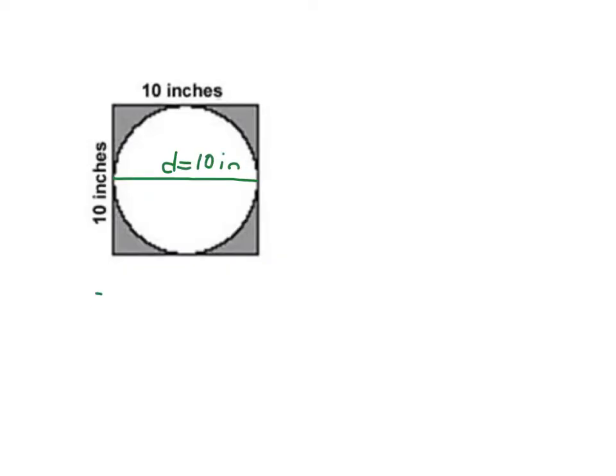So if my diameter is 10, then my radius is going to be half my diameter. So 10 divided by 2 would be 5 inches. And for pi, in all of these problems, I'm going to use 3.14 as my estimate.